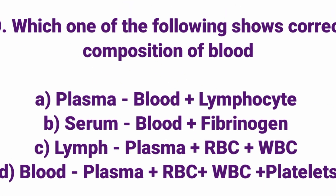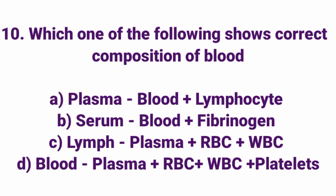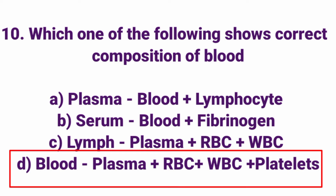Which one of the following regarding blood composition is correct? Answer: Option D. Blood = Plasma + RBC + WBC + Platelets.